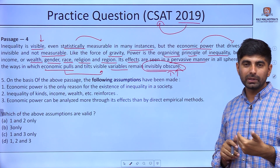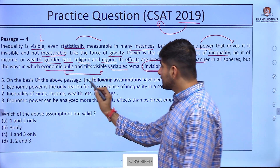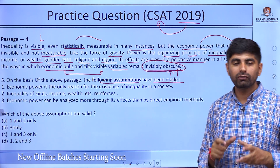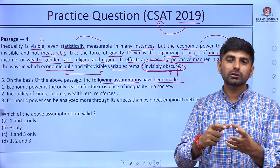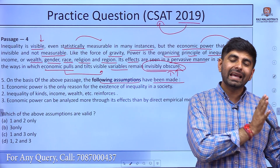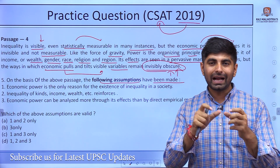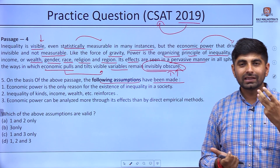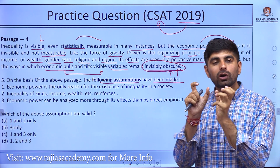We have got the main idea of the passage. Now let's focus on the question: on the basis of the above passage, the following assumptions have been made. We are looking at an assumption-type question. An assumption is something which is aligned with the main aim of the passage — the author is trying to say something and you align the given option with it.